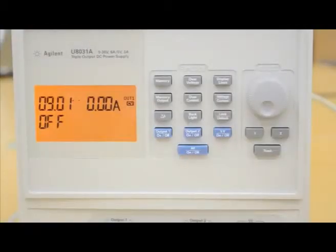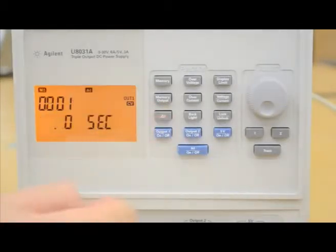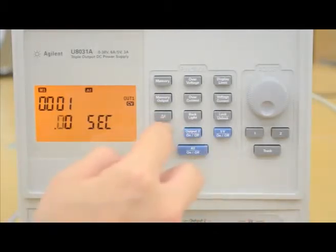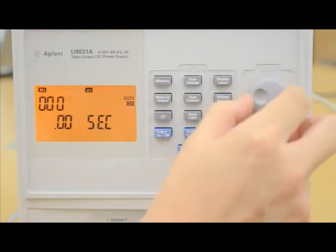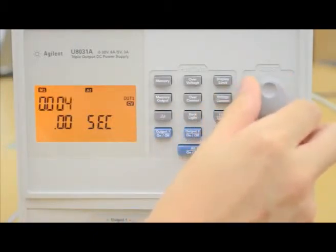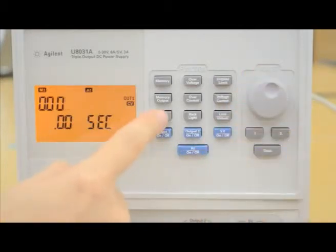Now I would like to tell the power supply to output the voltage for a predefined interval of 5 seconds. Press Delta T once. You will see the M1 indicator. Turn the knob until the display shows 5 seconds. Press and hold Delta T to save the interval setting for M1.